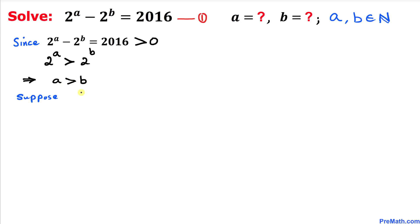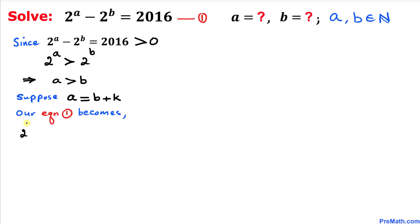Let's suppose that a equals b plus some constant k. Then equation 1 can be rewritten by substituting a with b plus k, giving us 2 power (b plus k) minus 2 power b equals 2016.